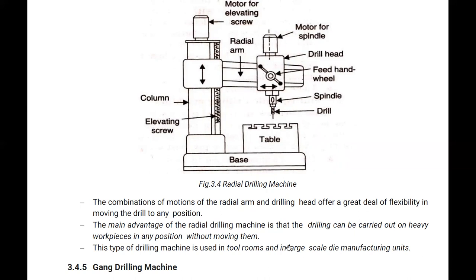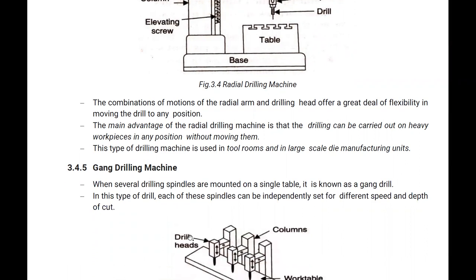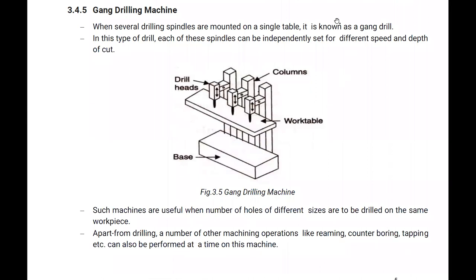Next is the gang drilling machine. When several drilling spindles are mounted on a single table, instead of a single drill we have multiple drills — that is why it is called a gang drill. The drills can be arranged in circular or other configurations, and the drive mechanism can be individual or served through a single motor.